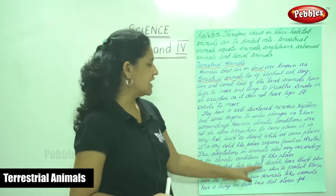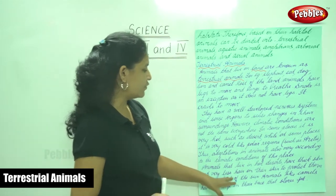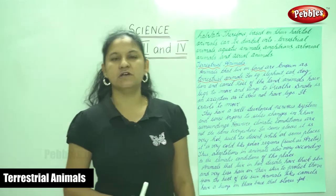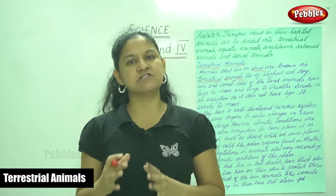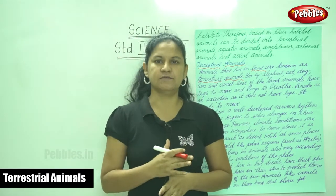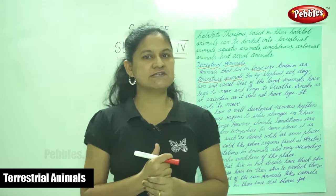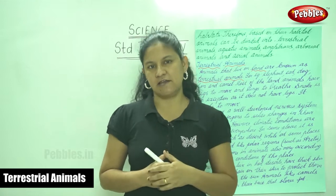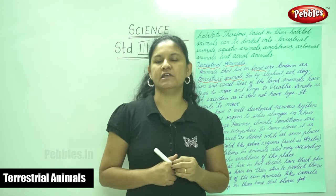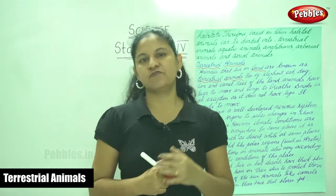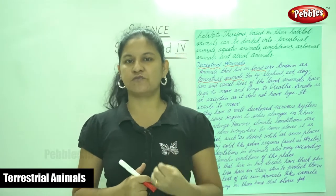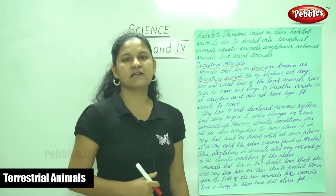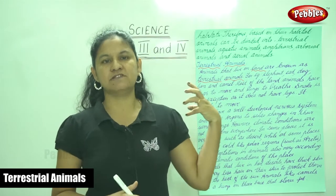Animals that live in hot deserts have thick skin and very little hair on their body to protect them from the heat of the Sun. The skin of the animal is designed according to the place in which it survives. For example, the camel, which lives in the desert, has very thick skin and very little hair to safeguard its skin from the penetration of the Sun's rays. Animals like camels also have a hump on their back that stores fat.